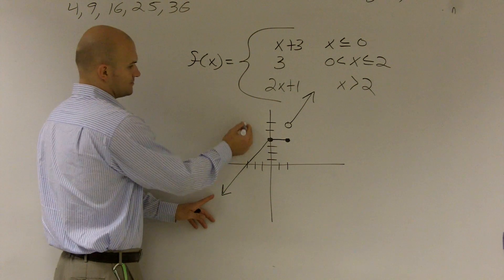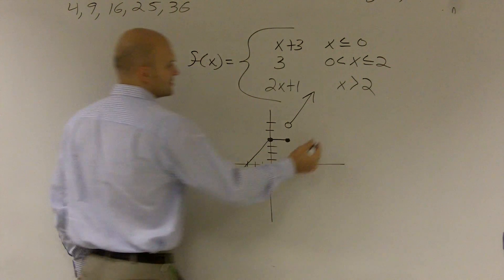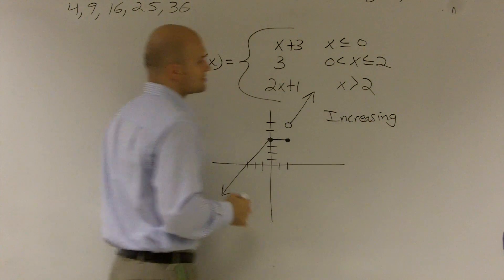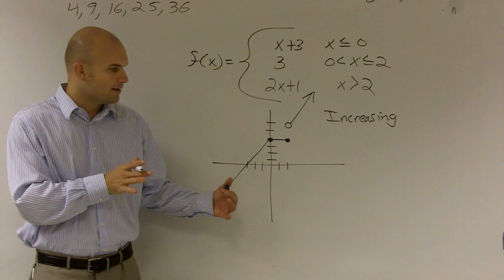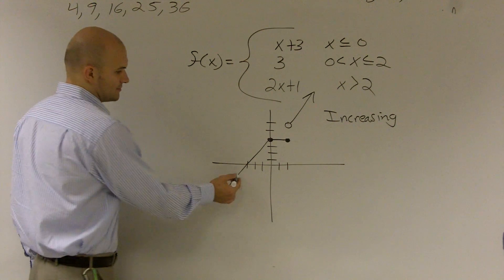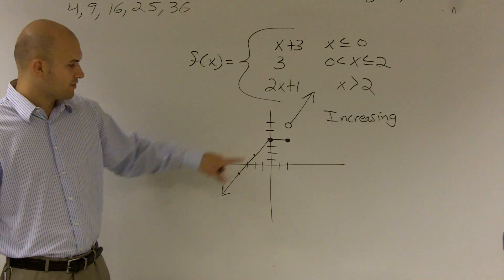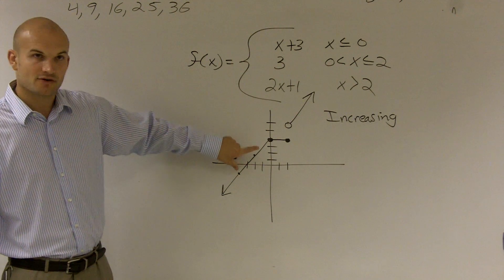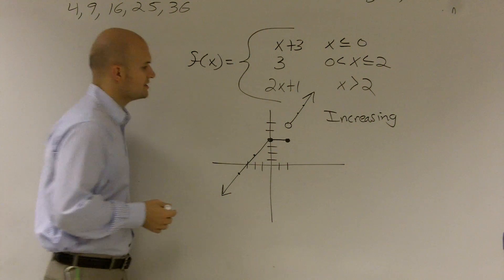Let's look at this first one. When we're looking for increasing, we're looking from left to right — when is the rightmost point greater than the leftmost point? You can see if I pick two points from left to right, this point is greater than this point as far as its output value. So this is increasing. And if I look at these two points, the rightmost value has a greater output, so that's increasing as well.